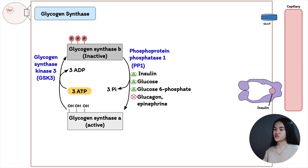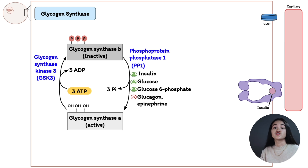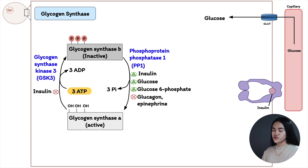High levels of insulin, glucose, and glucose 6-phosphate activate PP1 to stimulate glycogen synthase a, enabling glycogen synthesis for storage. Inhibitors include glucagon and epinephrine. Glucagon signals that glucose levels are low, so the body needs to mobilize glycogen — glucagon is going to inactivate glycogen synthase a and stimulate glycogen breakdown to increase glucose levels. After a carbohydrate-rich meal, blood glucose increases and triggers insulin secretion.